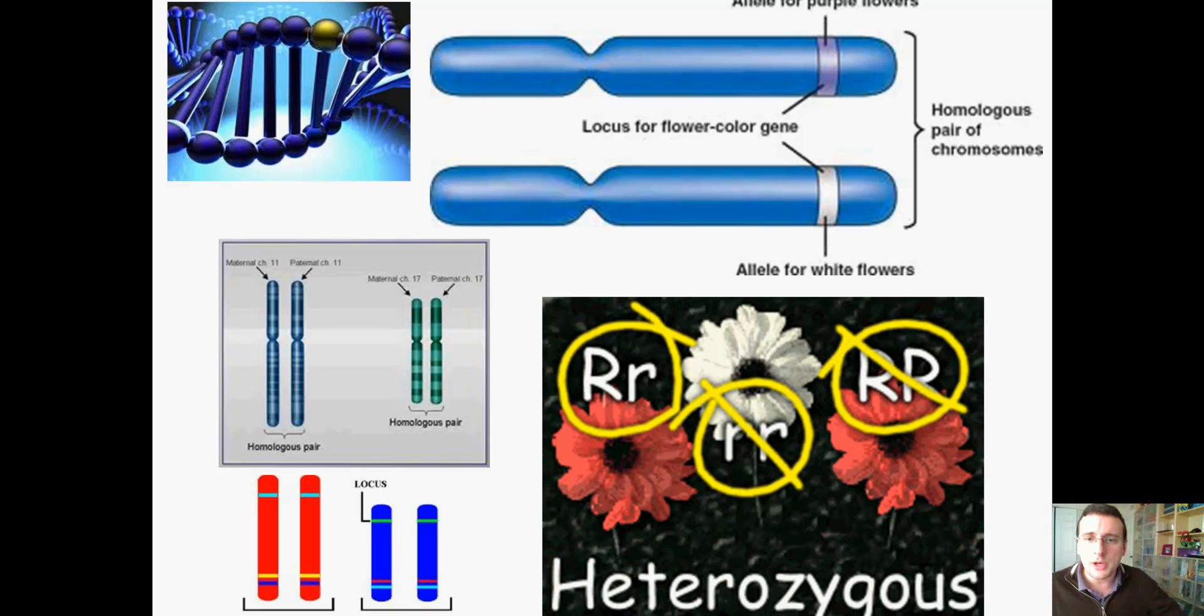The best way to understand how genetics works is to think of it as an encyclopedia of information. So you have inside each one of your cells an encyclopedia of genetic knowledge. And all the cells of your body have this encyclopedia of genetic knowledge in it.